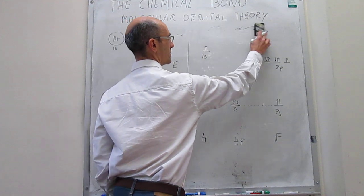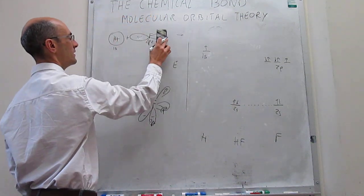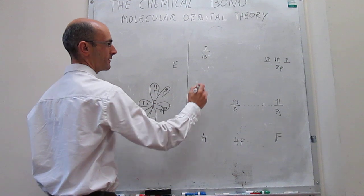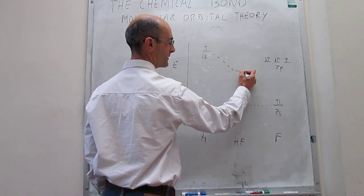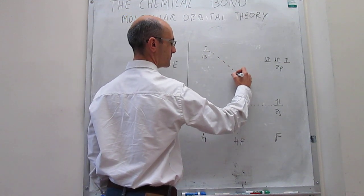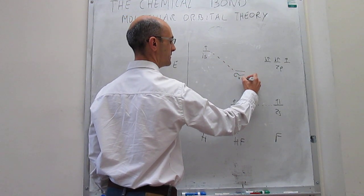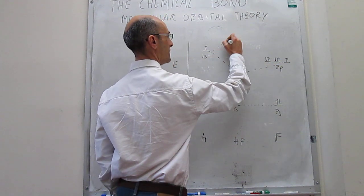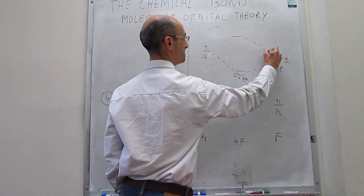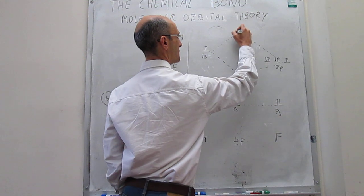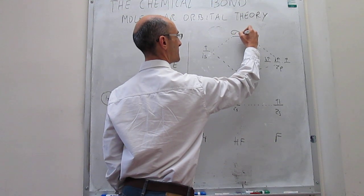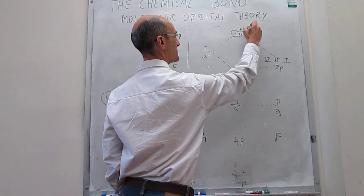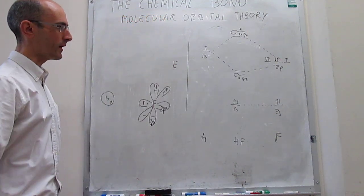We can now write these in the molecular orbital diagram. That combination gives rise to a bonding orbital, which we call sigma(1s, 2pz), and then an anti-bonding orbital, sigma*(1s, 2pz).